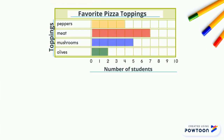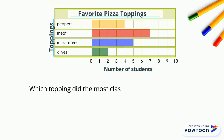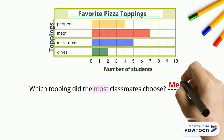After finishing the bar graph table, we will answer the questions. Let's start with number one: which topping did most classmates choose? We will look at the bar graph — it's the red bar because it's the longest. So the answer is meat.